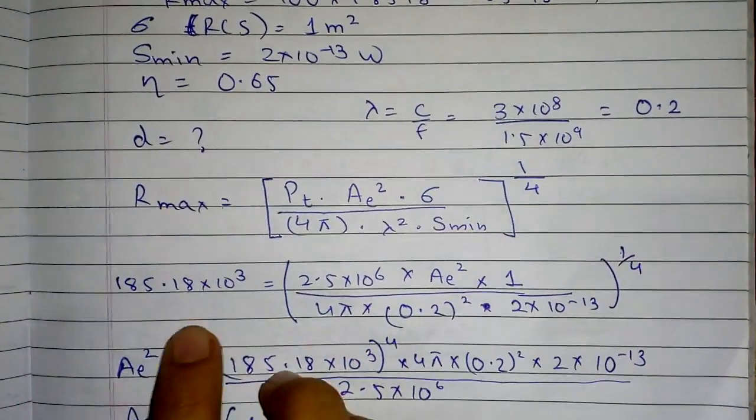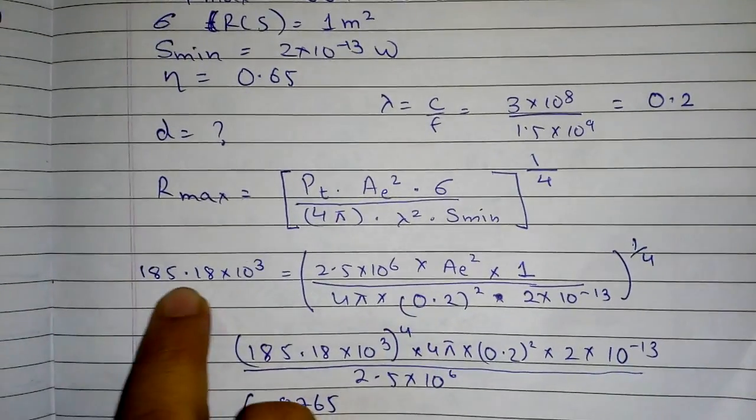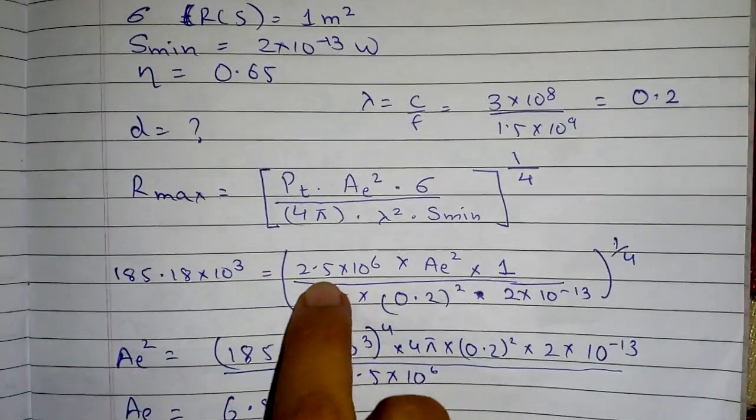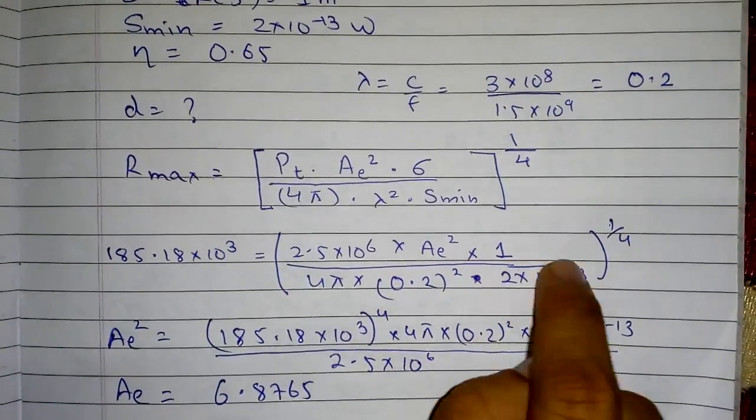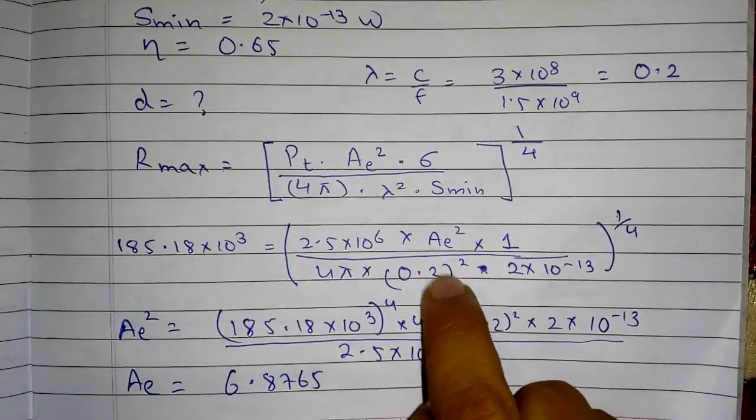We cannot directly calculate diameter. Let's substitute the values. 185.18×10^3 equals the fourth root of 2.5×10^6 times AE squared times 1 divided by 4π times 0.2 squared.